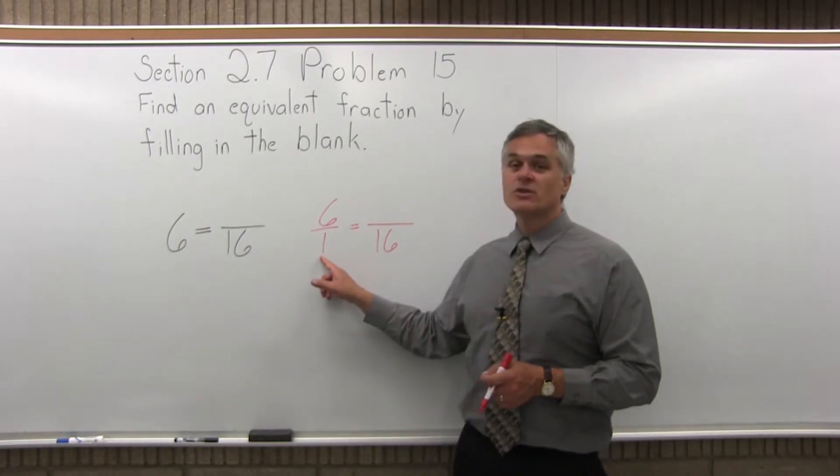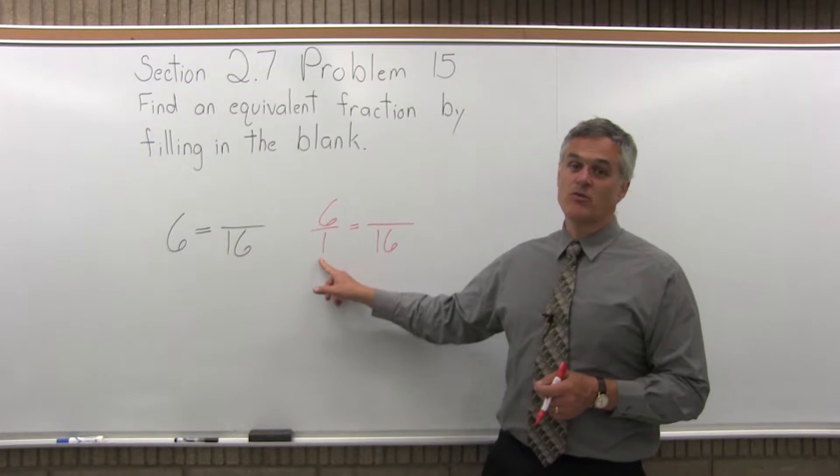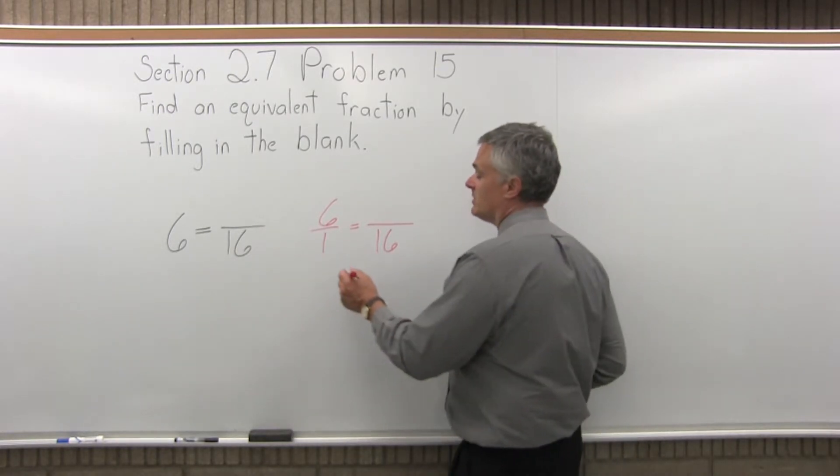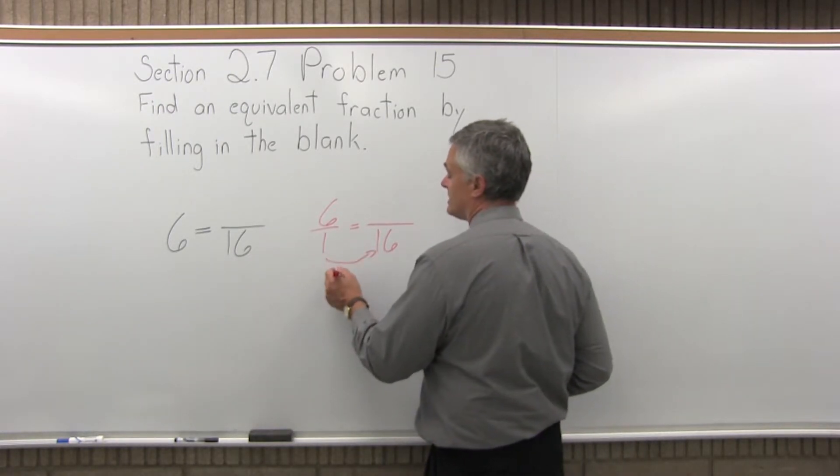So now, first compare the denominators. The denominator of 1 times some value multiplied to 16. Well, it must be times 16. 1 times 16 is 16.